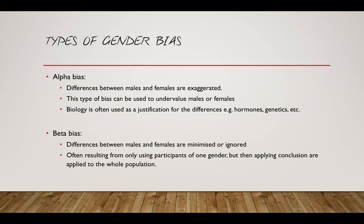There's alpha and beta bias. Alpha refers to exaggerating the differences; beta minimizes them. Alpha is often used to undervalue one sex or gender — not always deliberately, but sometimes deliberately. Females were considered to be inferior in the 30s and 40s, and serious scientific research tried to back that up.